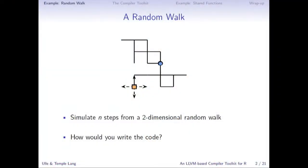I want to start with an example. The example we're going to look at is a random walk. Say we want to simulate N steps from a 2D random walk. For anyone not familiar, the idea is that there's a little turtle on a two-dimensional grid, and at each time step the turtle moves up, down, left, or right, choosing by flipping a coin to select the axis and then flipping again to decide whether it moves forward or backward.